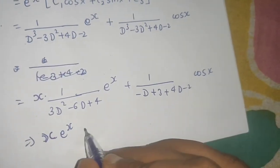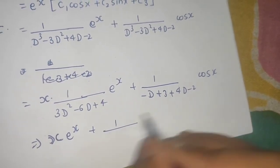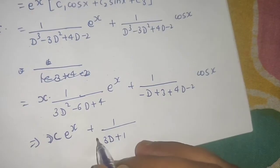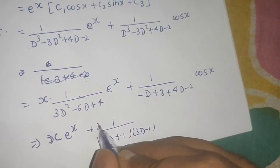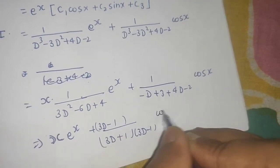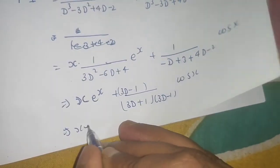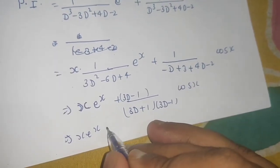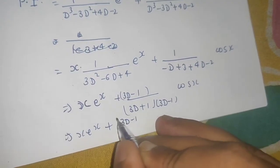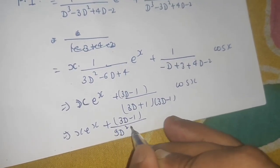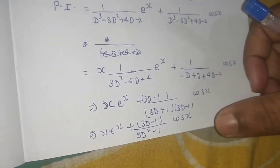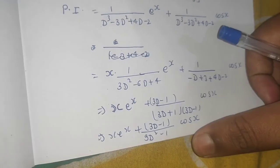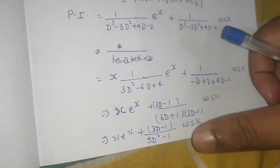For the cos x part: PI = 1/(3D + 1) operating on cos x, after replacing D² = −1. Multiply and divide by (3D − 1), giving (3D − 1)/(9D² − 1). Replacing D² = −1: denominator = −9 − 1 = −10, so the factor is −1/10.